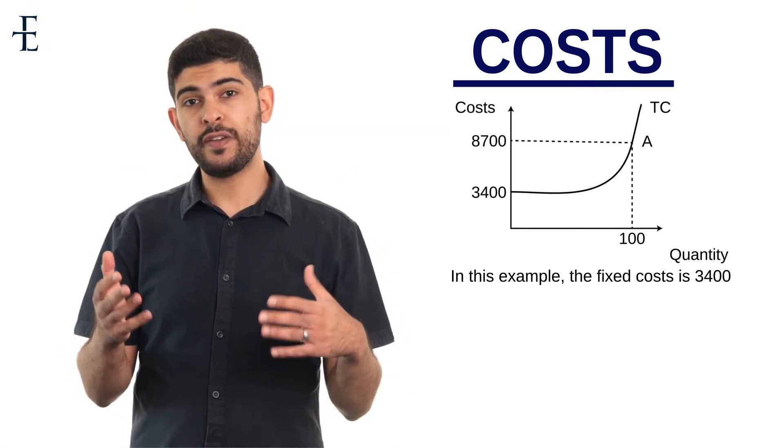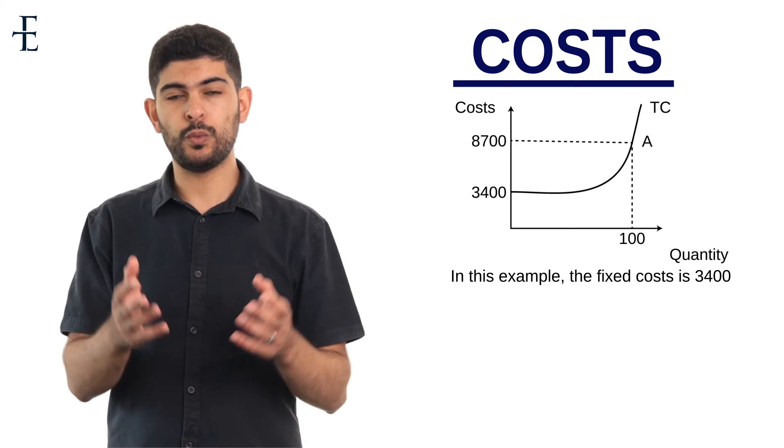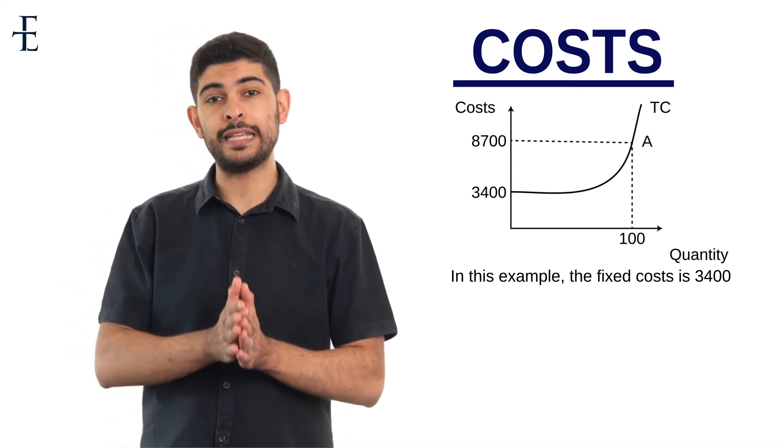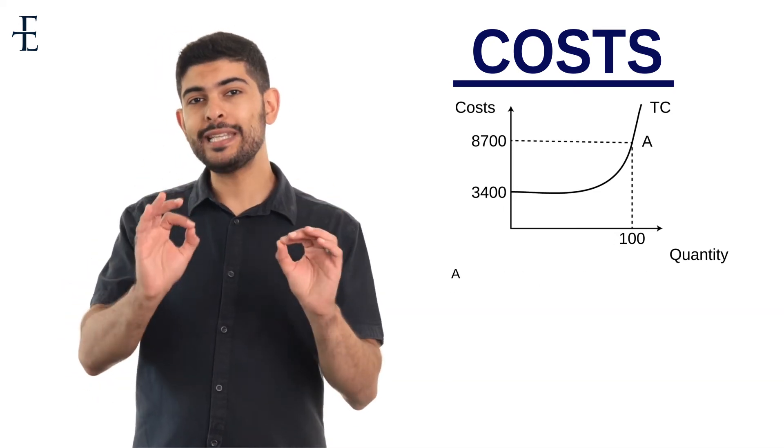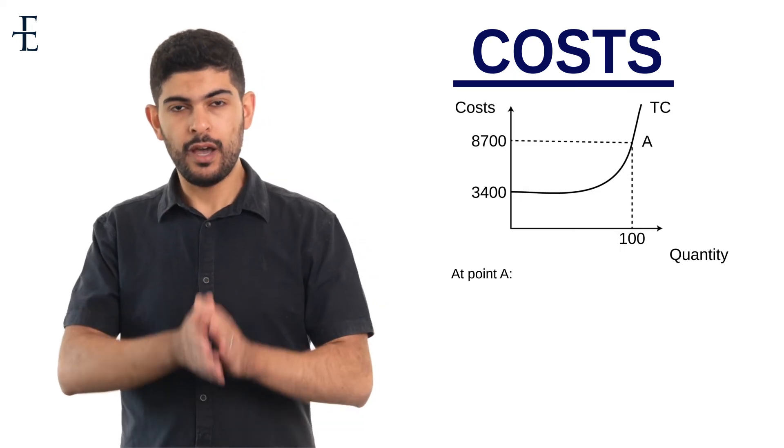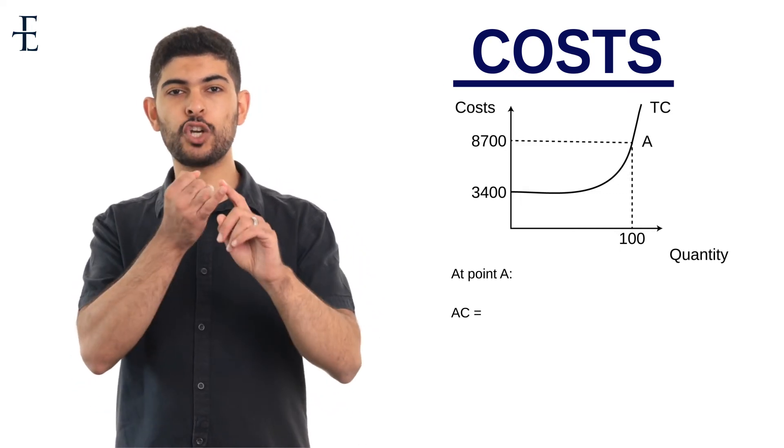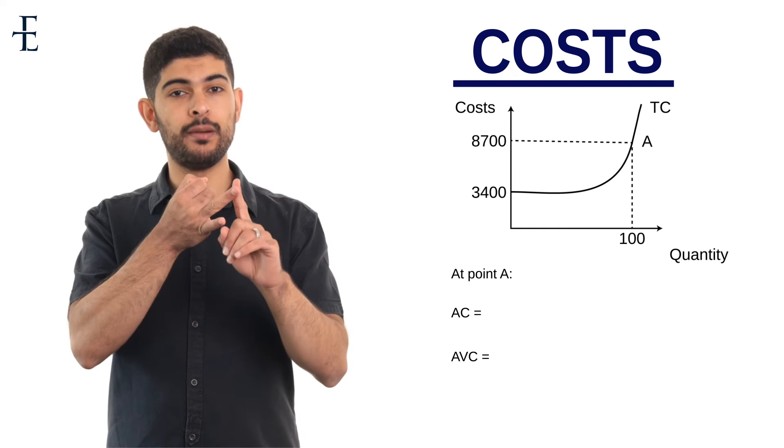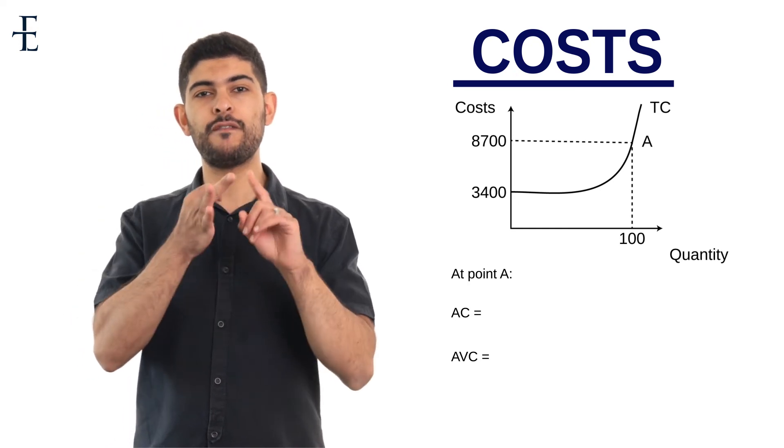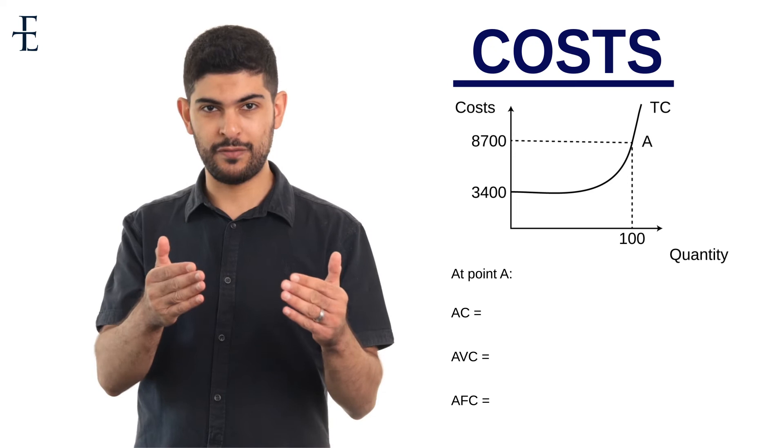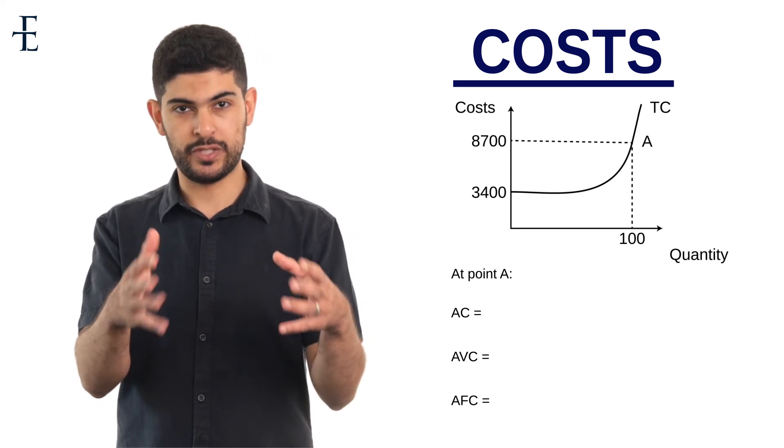In other words, in this made up example, the fixed cost is 100% $3,400. Now that we've established that the fixed cost is $3,400, what I'd like you to attempt by yourself is the following: at point A on this diagram, I'd like you to tell me what the average cost is, what the average variable cost is, and what the average fixed cost is. It's probably a good idea to pause the video at this stage and attempt these by yourself.